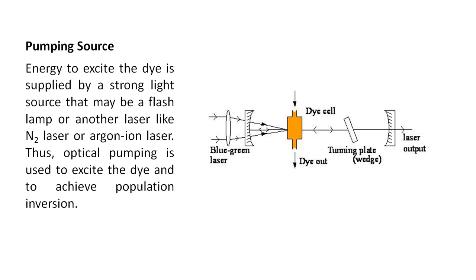Pumping source: energy to excite the dye is supplied by a strong light source that may be a flash lamp or another laser like N₂ laser or Argon-ion laser. Thus, optical pumping is used to excite the dye and to achieve population inversion. Optical pumping is also used in Ruby laser.